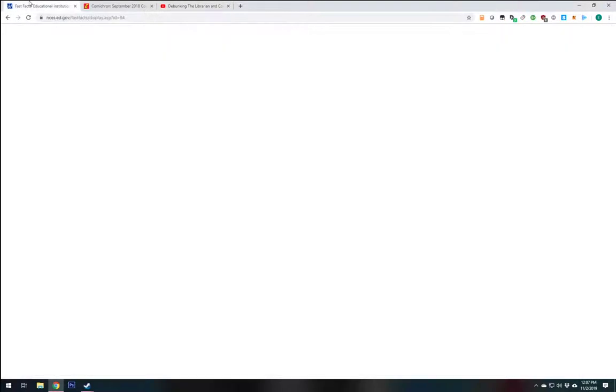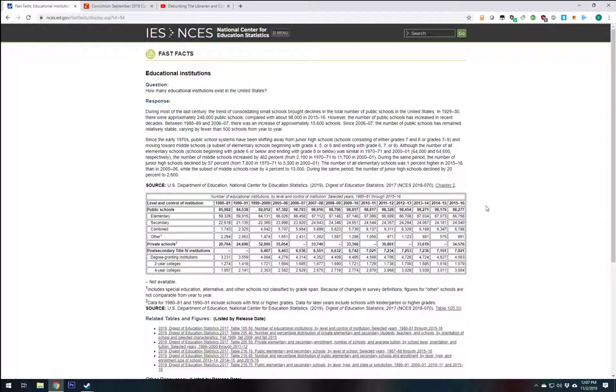All right, so let's flip over here. How many schools are there in the United States of America? According to the National Center for Education Statistics, this was very easy to find, by the way. This was like one search on DuckDuckGo. There it is. According to them, we got about 100,000 elementary and secondary schools combined.